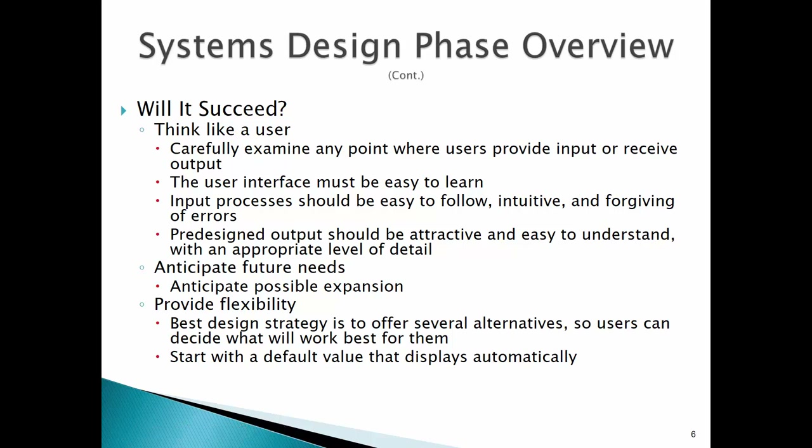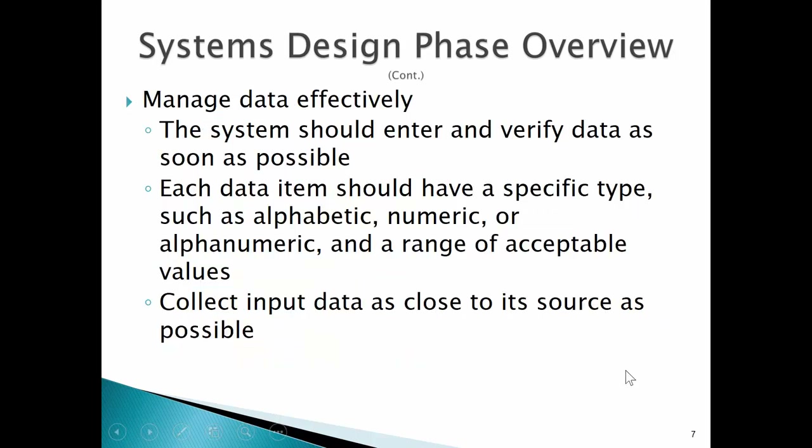Start with a default value that displays automatically — if that's the value entered 75% of the time, the user can just tab through it. We need to manage data effectively. The system should enter and verify data as soon as possible. If we're entering a new customer, there should be a check to make sure someone hasn't already entered that customer, so we don't have redundant records. Each data item should have a specific type — alphabetic, numeric, or alphanumeric — and a range of acceptable values.